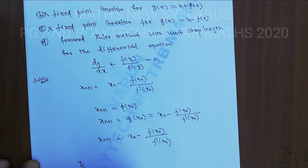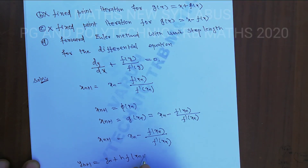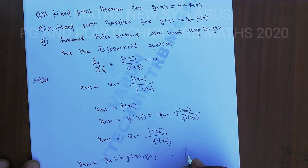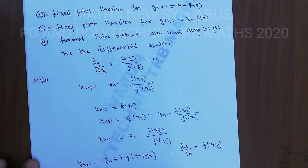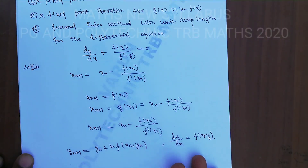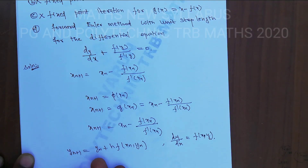For Option D, the forward Euler method gives: y_{n+1} = y_n + h · f(x_n, y_n). This is the Euler method for the differential equation dy/dx = f(x, y).